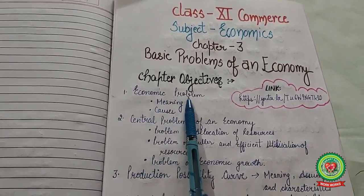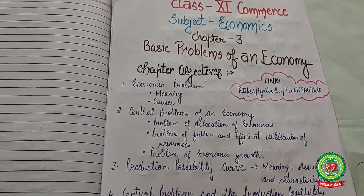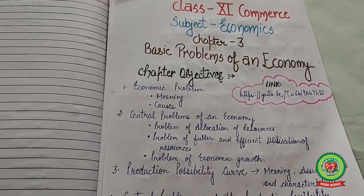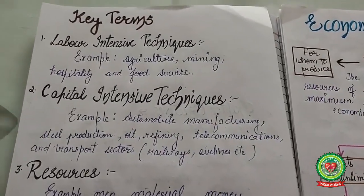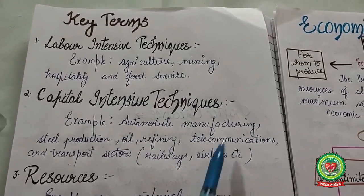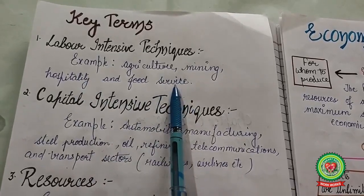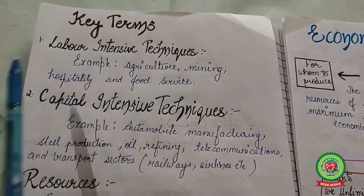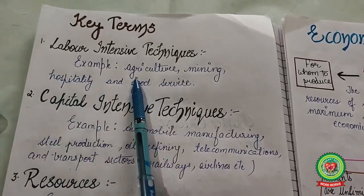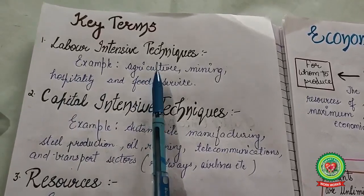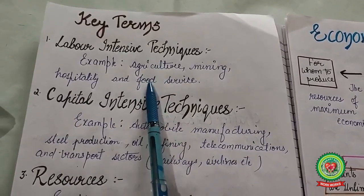Before today's topics, let us discuss key terms. First is labor intensive techniques — examples include agriculture, mining, hospitality, and food service. These are techniques that use more labor, meaning men are used more for the production of goods and services.